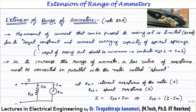As we have seen in the last class, the amount of current that can be passed through the moving coil is limited to about 20 milliamperes, due to weight constraints — the weight of the moving part should be minimum to decrease friction — and the current carrying capacity of the spiral springs. In a PMMC instrument, springs serve two purposes: providing the controlling torque and carrying current from the external circuit into the moving coil.